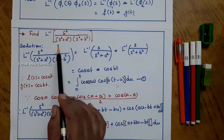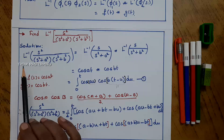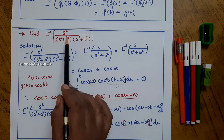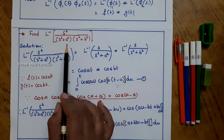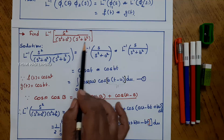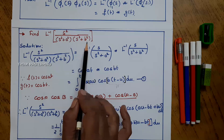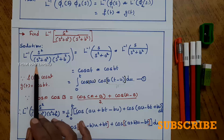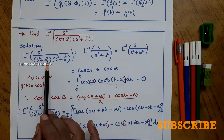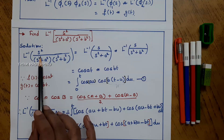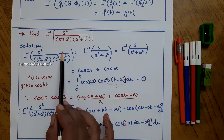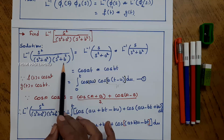Now we are going to see the problem using convolution. We are given L inverse of s squared divided by (s squared plus a squared) into (s squared plus b squared), where a and b are constants. Using the convolution, I can write it as a product of two functions: s divided by (s squared plus a squared) into s divided by (s squared plus b squared).